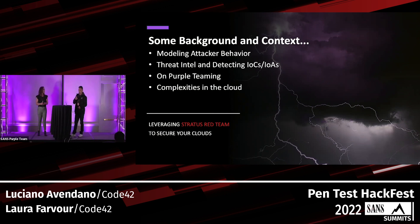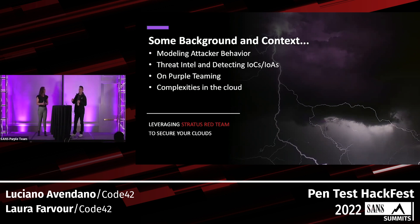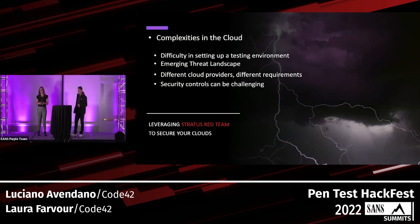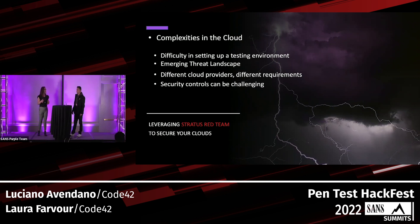Some background and context: there's a plethora of resources that talk about the kill chain, mostly traditional rather than cloud-specific. We'll talk about threat intel and detecting IOCs — collecting results from these exercises to build your catalog of IOCs — and touch on the complexities of the cloud. If you watched Nick's talk on AWS security, it demonstrates just how complex and how many toggles there are that folks might choose without realizing the consequences, particularly wildcards.